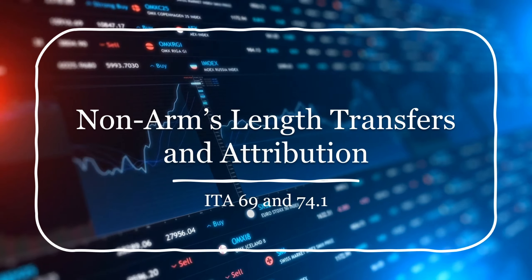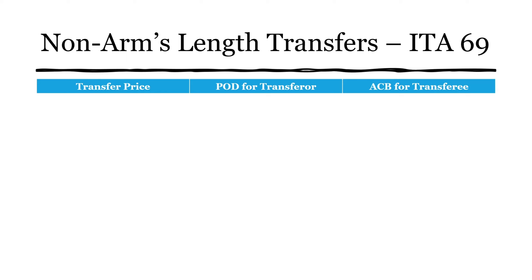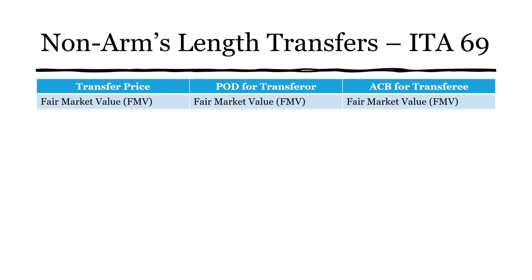First, let's take a quick look at a summary of non-arms length transfers. When we're looking at a transfer, we need to consider the transfer price, the proceeds of disposition for the transferor, and — in the rightmost column — the adjusted cost base for the transferee. If the transfer price occurs at fair market value (FMV), then the proceeds of disposition and the adjusted cost base for the transferee all occur at fair market value.